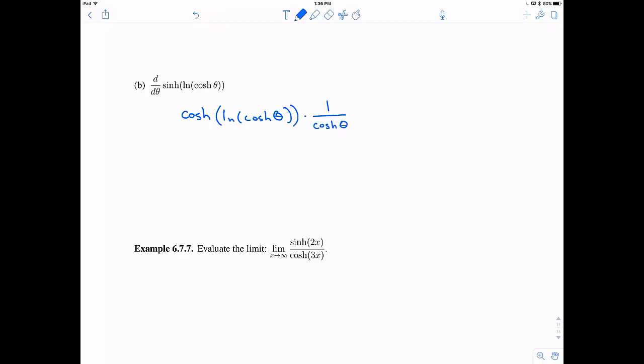So the derivative of natural log is 1 over its inerts, and then times the derivative of hyperbolic cosine, which is positive hyperbolic sine. So that's the big thing here.